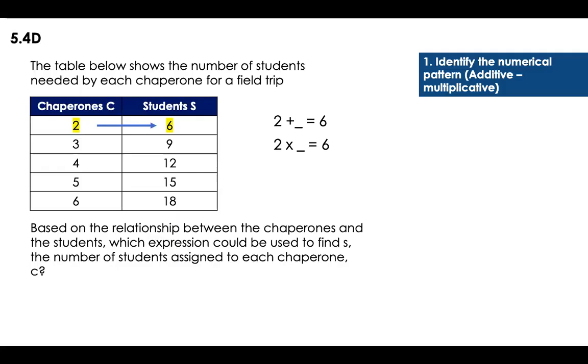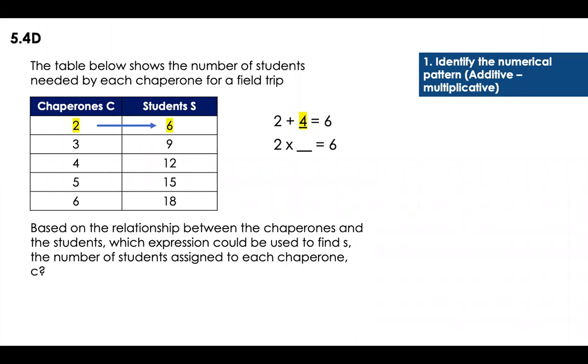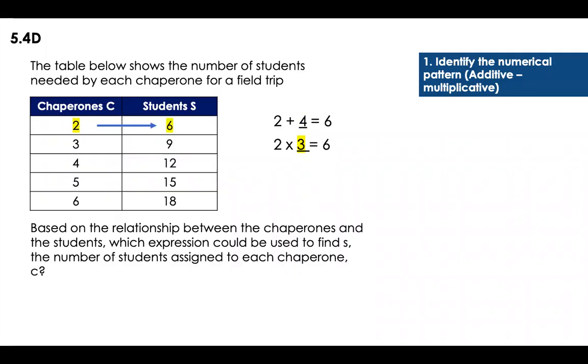Let's find always first addition because it's easier. Two plus something to get to six? I'm going to be doing the inverse. Six minus two is equal to four. Two plus four is equal to six. Now let's do the multiplication. Can I do two times something to get equal to six? Yes. Two times three. Two times three is equal to six.